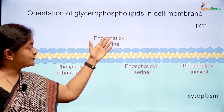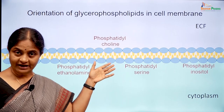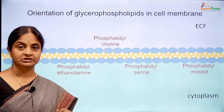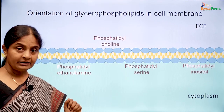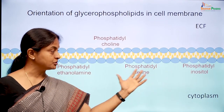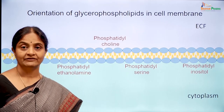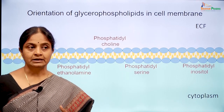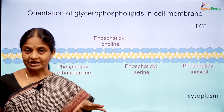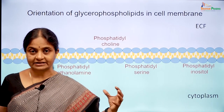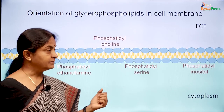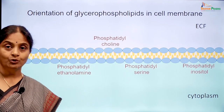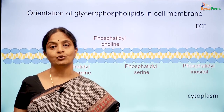For example, if phosphatidylcholine moves to the inner leaflet for some reason, flipases will push them back against a concentration gradient to the outer leaflet. Flopases help to maintain the concentrations of the other three in the inner leaflet only. In the fluid mosaic model of Singer and Nicholson, lipids of the cell membrane can move laterally, but this lateral mobility is restricted to that particular leaflet — phosphatidylcholine can move only along the outer leaflet and the other three can move only along the inner leaflet.